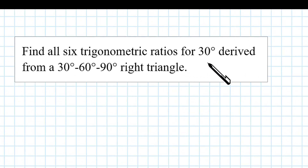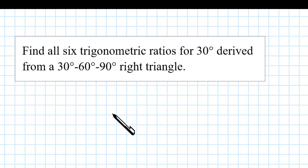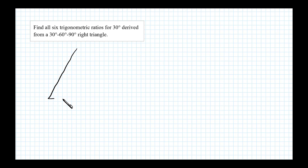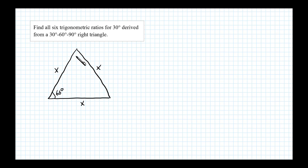Here we want to find all six trigonometric ratios for 30 degrees. We'll derive that using a 30-60-90 right triangle. To begin, we'll draw an equilateral triangle — that's a triangle where all the sides are the same. For an equilateral triangle, all angles are 60 degrees. From that, we can drop an altitude, which will form the 30-60-90 right triangle that we want.